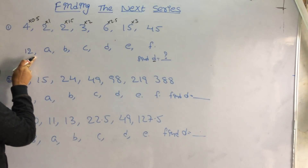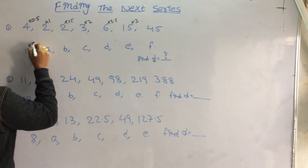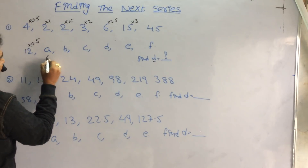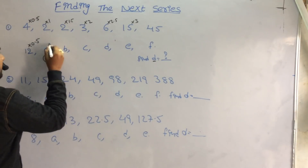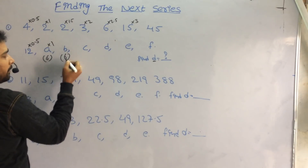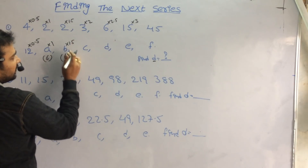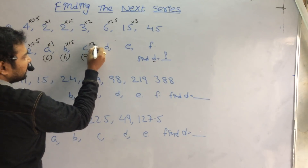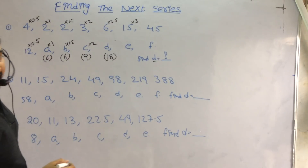We apply the same logic to the given question. The given number 12 is multiplied with 0.5, which is 6 — that means the value of A is 6. Then 6 multiplied with 1.5 is 9. Then 9 into 2 is 18. So the value of D is 18.